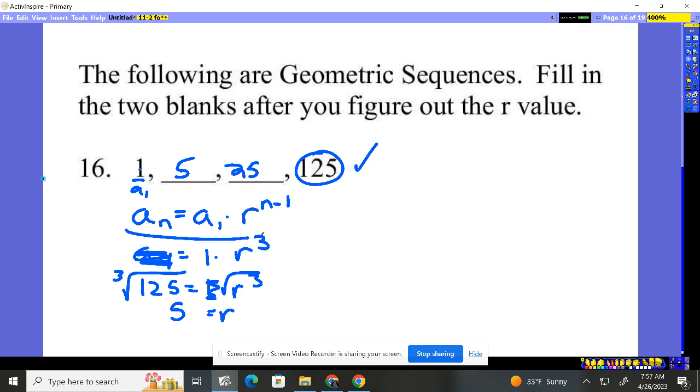I must just start with this formula. You're going to have the fourth term in this case and the first term. And you know both these numbers so you can find what it's going up by, what it's being multiplied by every single time.